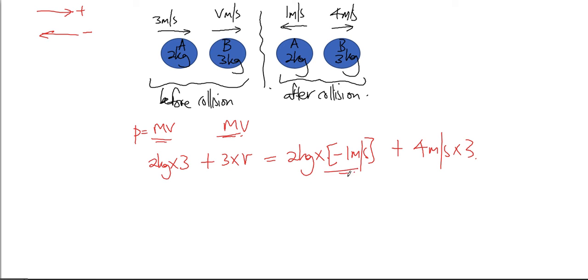Now let's solve this. 6 plus 3v equals negative 2 plus 12. 6 plus 3v equals 10.